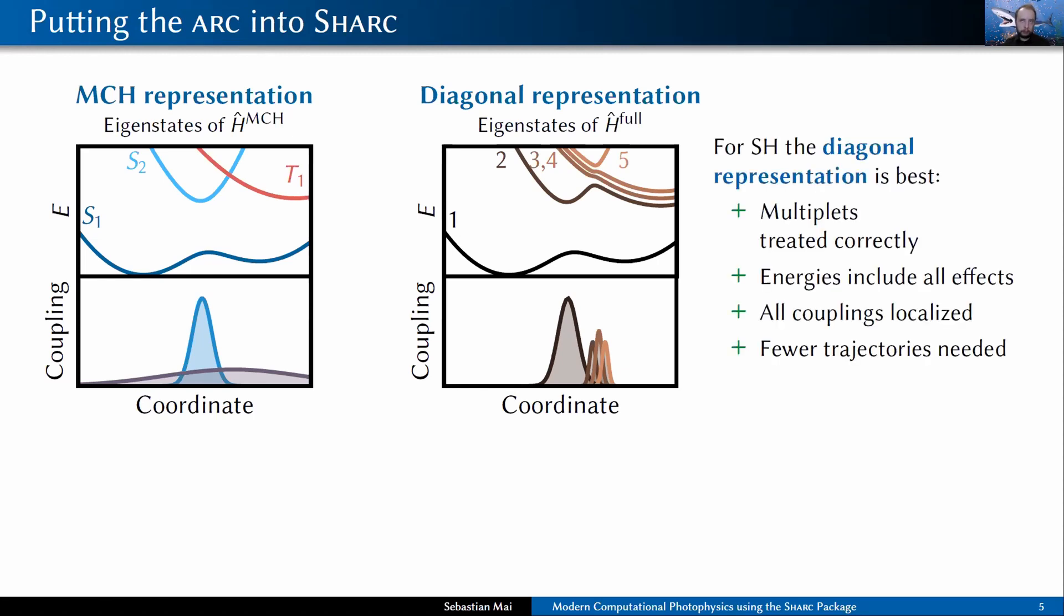All these states have the nice advantage that all the couplings between them are localized and that spin multiplets are properly split into different components. These properties are actually big advantages for surface hopping because through this splitting up of the multiplet components, you get a correct description, a rotationally invariant description, and a proper energetic description of those. Through the localization of all the couplings, you require a lot smaller number of trajectories for statistical convergence. Hence, using surface hopping in this diagonal representation would be optimal. But as I said, quantum chemistry programs only provide the MCH data.